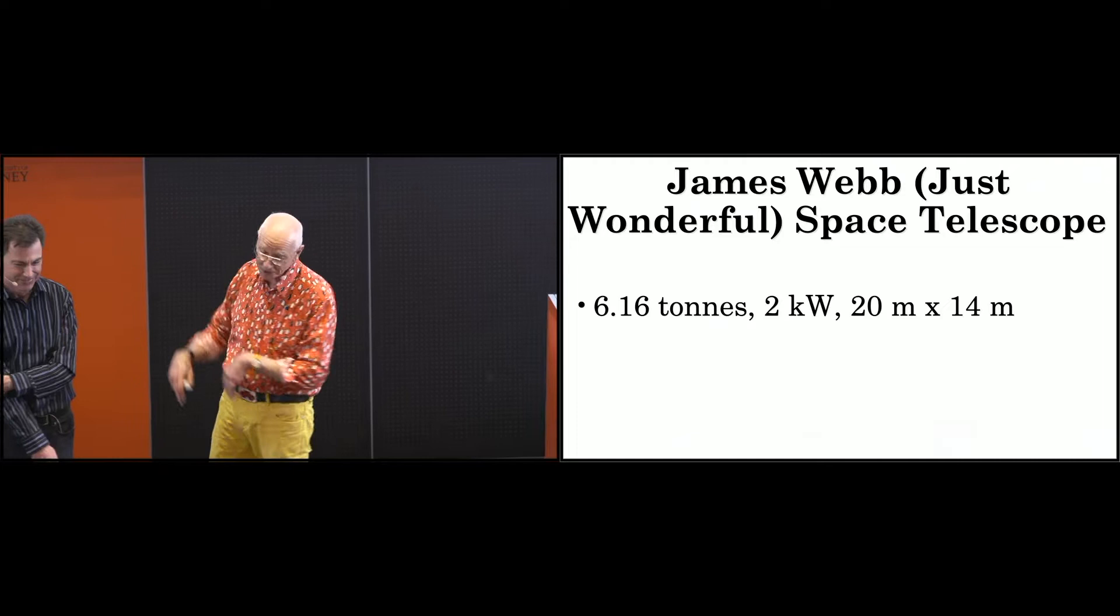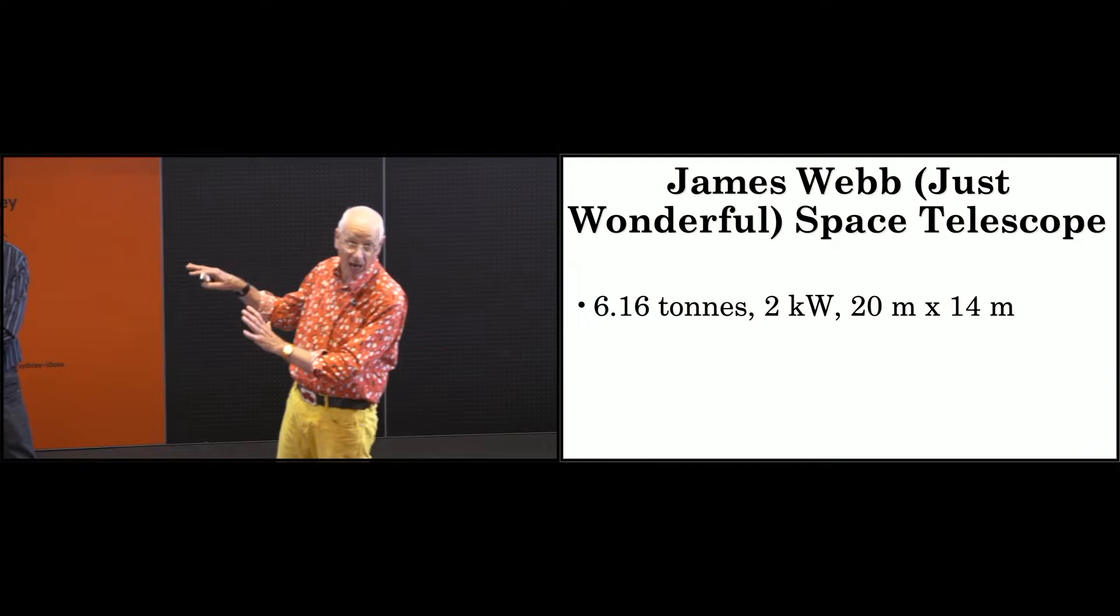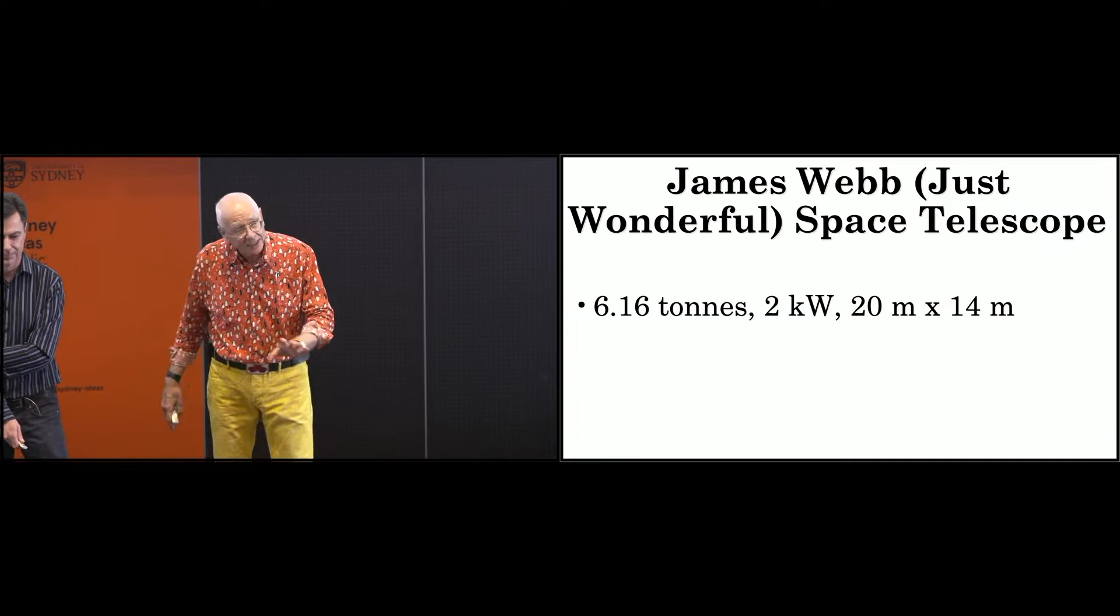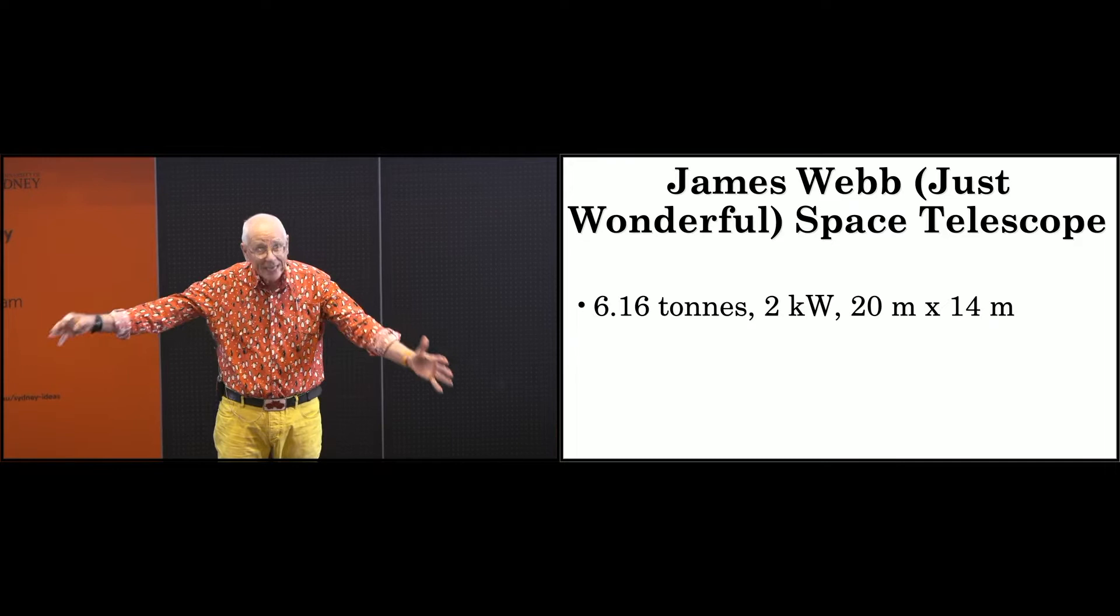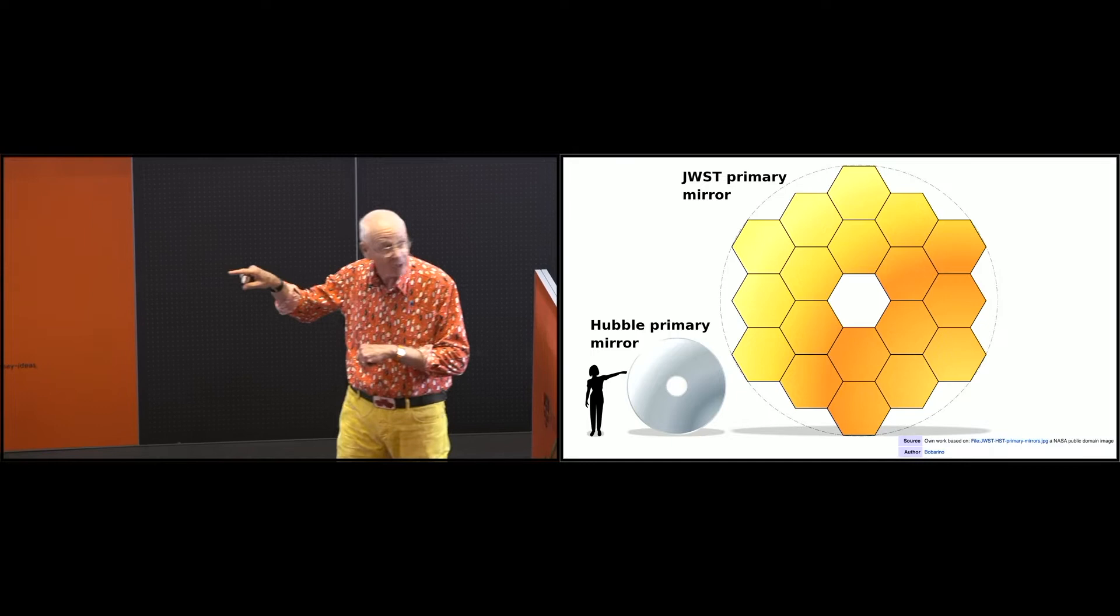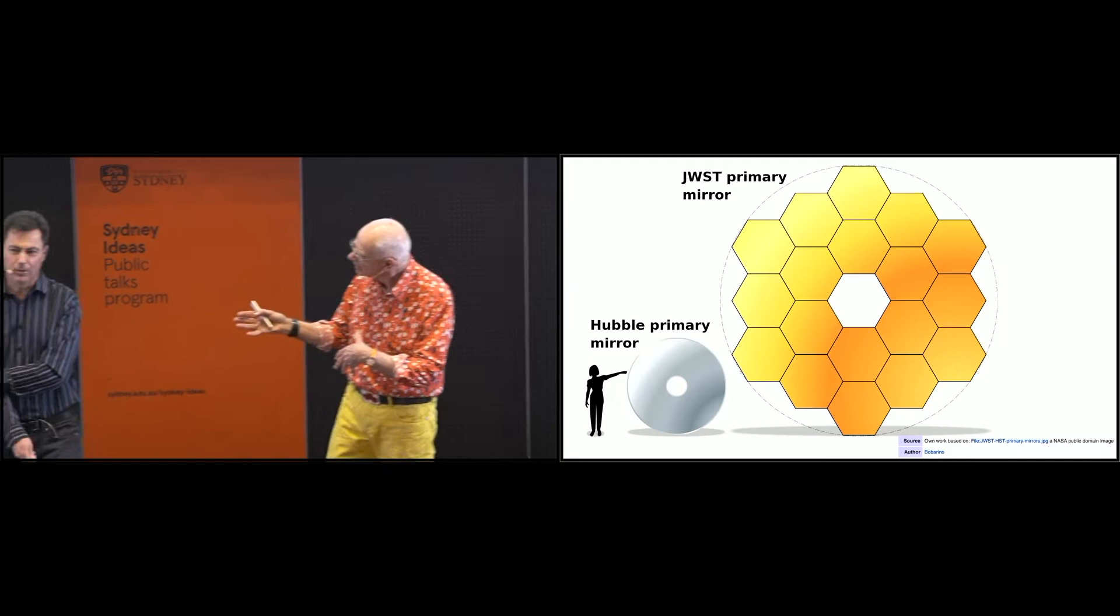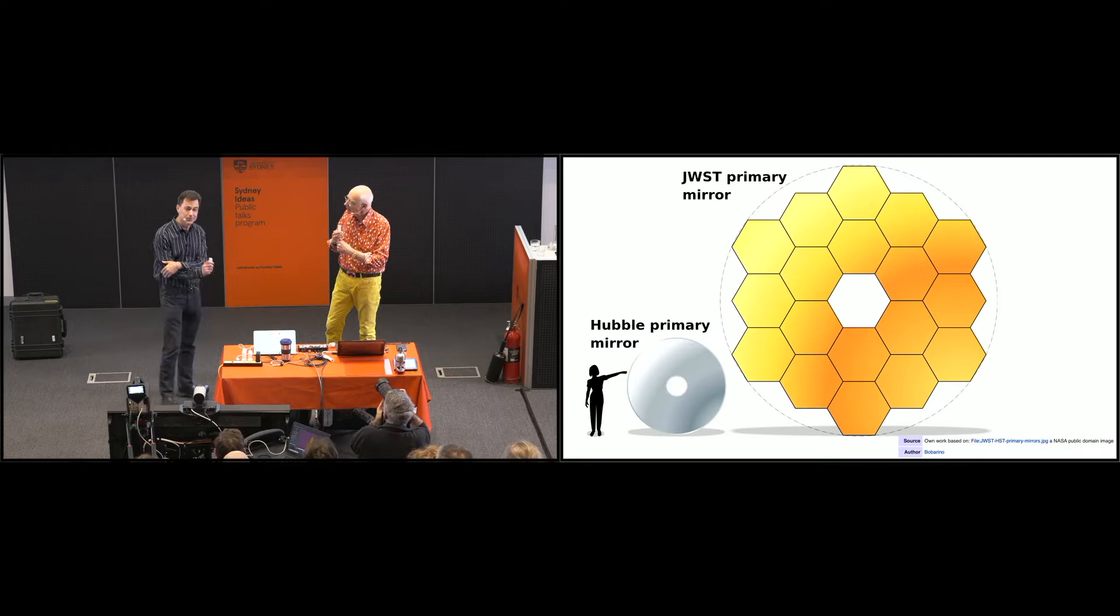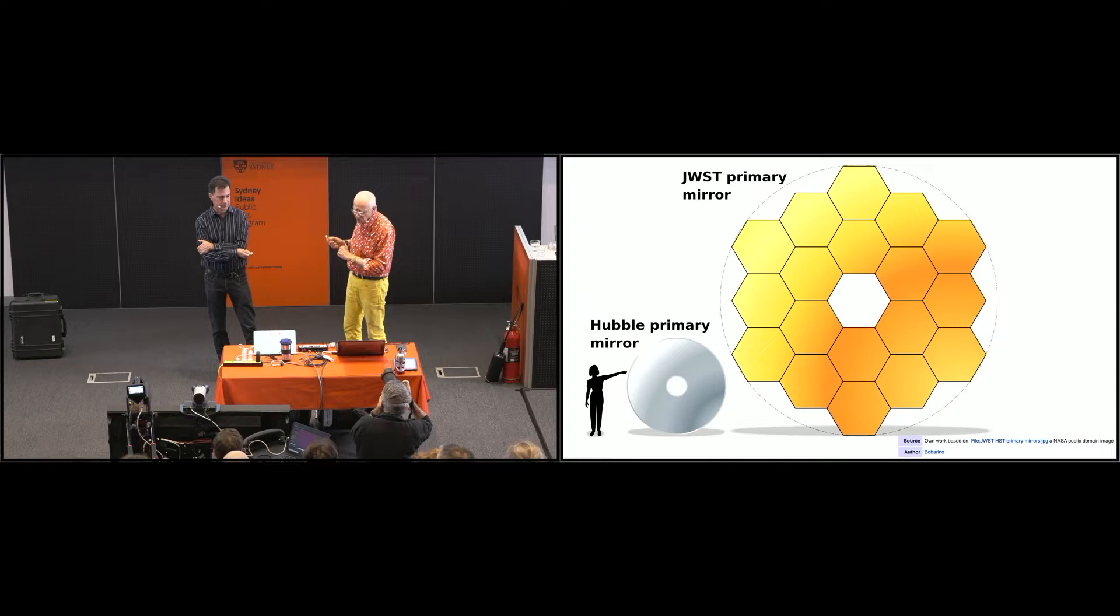Those spikes are an artefact due to the way the mirrors are shaped. The telescope weighs six tonnes and uses about two kilowatts, enough to run your dishwasher at full rate. It is huge - 20 metres by 14 metres. Here you can see the primary mirror on Hubble, about two and a half metres. On the JWST, you've got 18 mirrors, each of them gold covered.